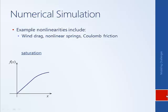Another typical type of nonlinearity is something called saturation. If we consider the horizontal axis to represent the input and the vertical axis to represent the output, most any physical system cannot generate an infinite output. Any actuator or amplifier will eventually saturate. For example, if you have a motor and supply it some voltage, eventually the torque or speed of the motor will reach some limit.